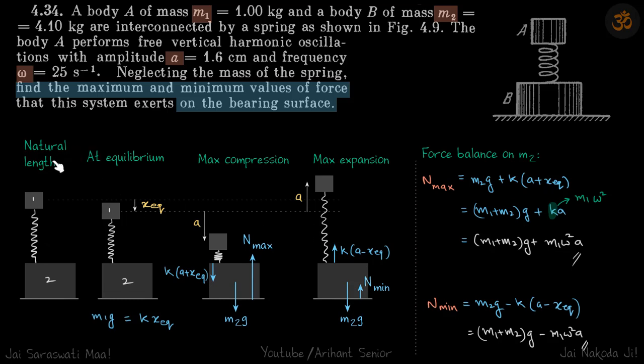Let's say this is the natural length of the spring. This is the equilibrium position. Due to the mass m1, the equilibrium position will be below the natural length.